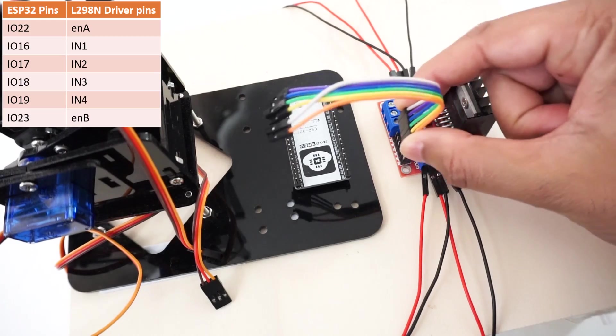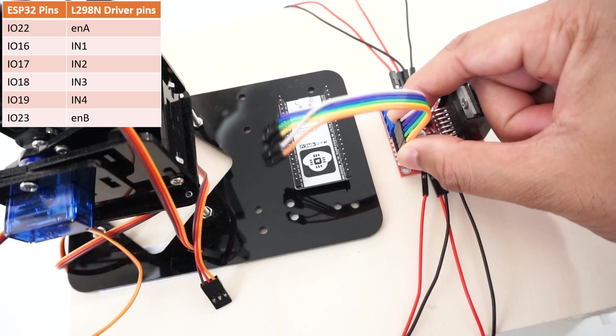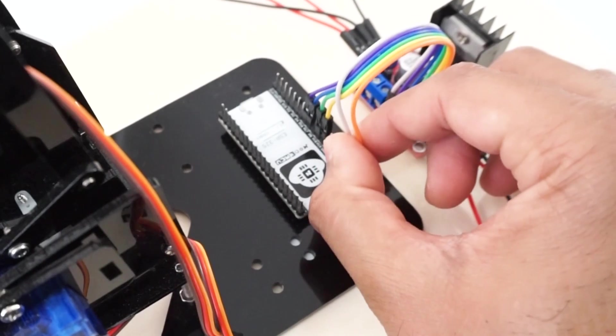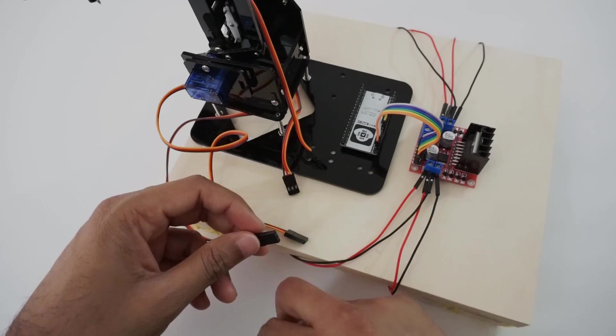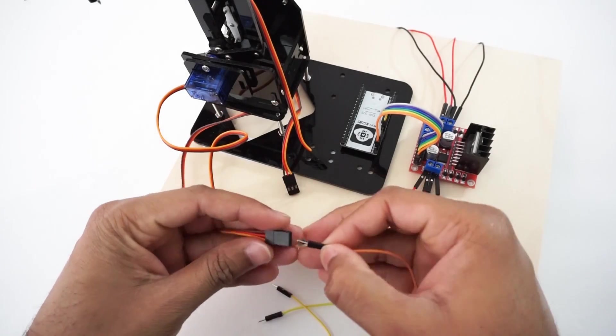Now, connect L298N motor driver module to ESP32 pins as per table. Connect servo motor signal pins to ESP32 module as per table.